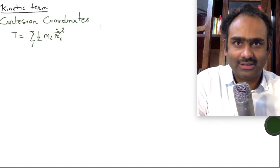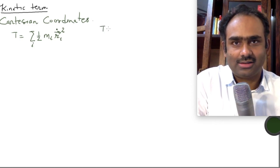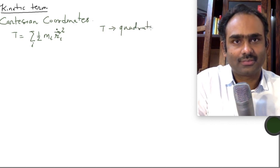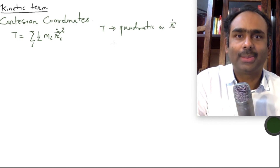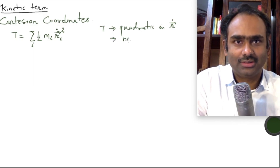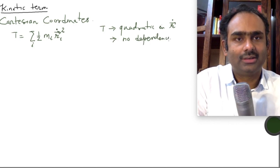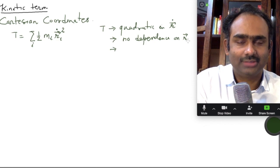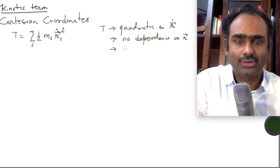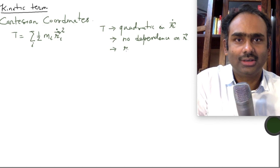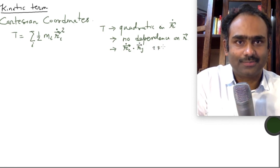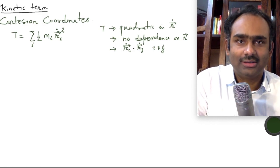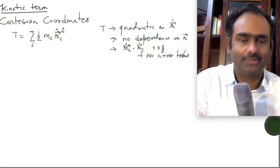When you are using generalized coordinates, T is quadratic in ṙ. Note that there is no dependence on r itself. And also, for example, there could have been an r² dependence which is absent. Also, there is no ṙᵢ·ṙⱼ kind of term where i is not equal to j — you have only the terms where i and j are equal. So there are no cross terms present.